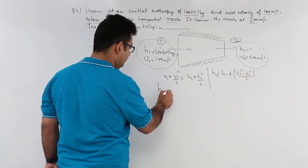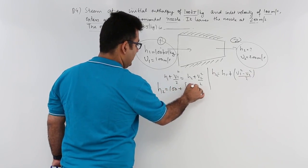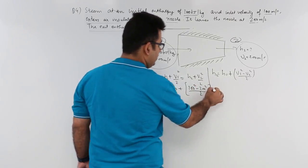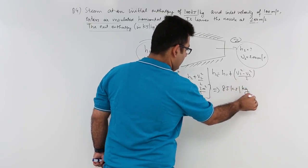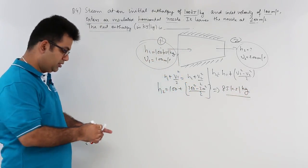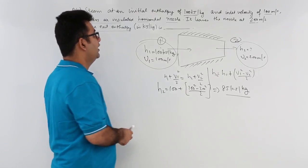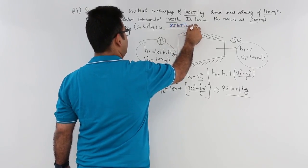So this would be 100 plus 100 square minus 200 square by 2. So this would be equal to 85 kilojoules per kg. So this answer, that is the enthalpy at the outlet, is 85 kilojoules per kg.